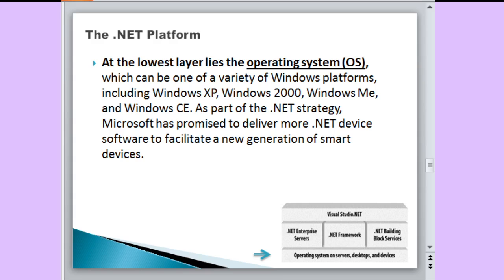The first and bottom layer is the operating system — that may be a server, that may be a desktop, anything. Since this is a product of Microsoft, .NET supports any variety of the Windows platform, including Windows XP, Windows 2000, and different Windows operating systems. As part of the .NET strategy, Microsoft has promised to deliver more .NET device software to facilitate a new generation of smart devices.